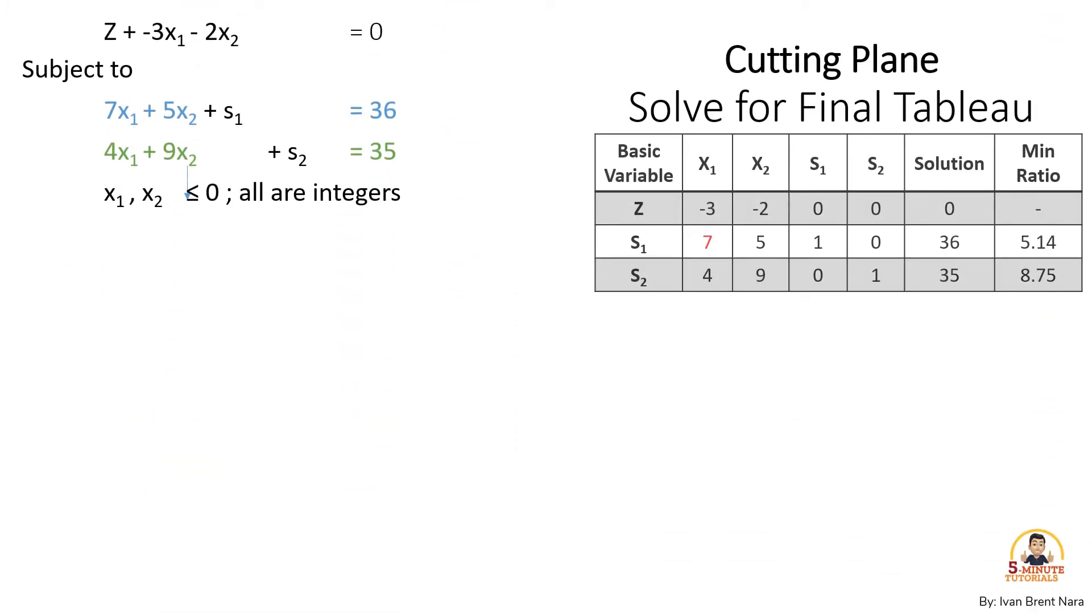The tableau looks like this, where the first column is the basic variables, column 2 to column 5 or x₁ to s₂ are the coefficient of the constraints, column 6 is the solution or the right hand side, and column 7 is for the ratio test.